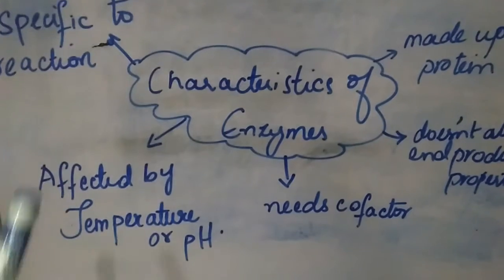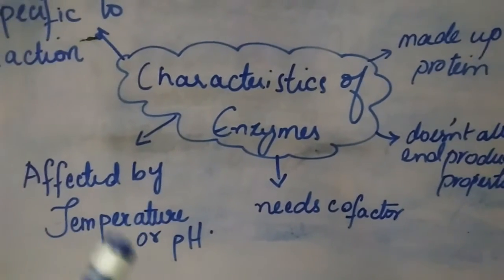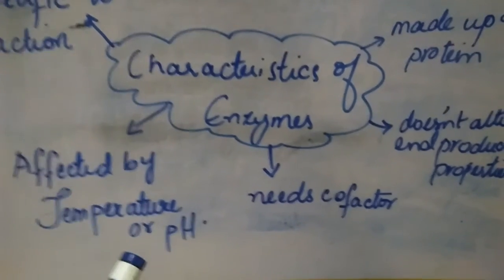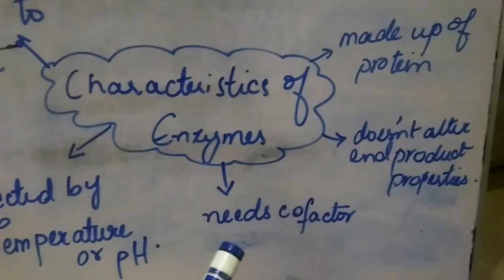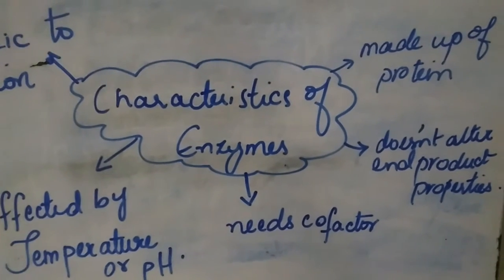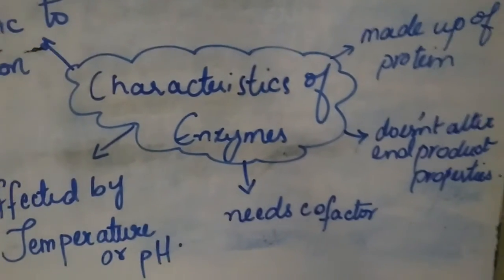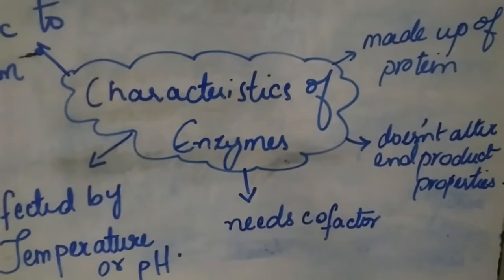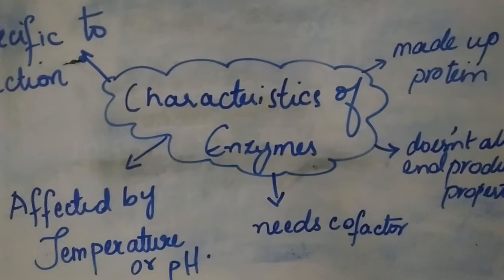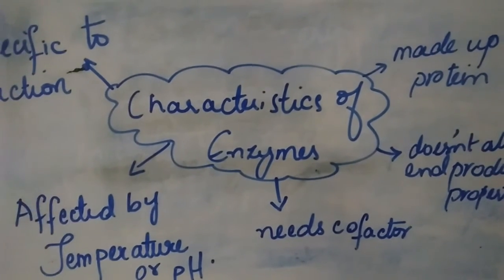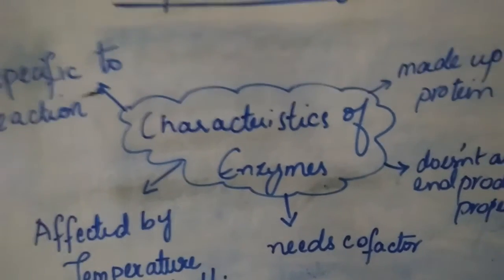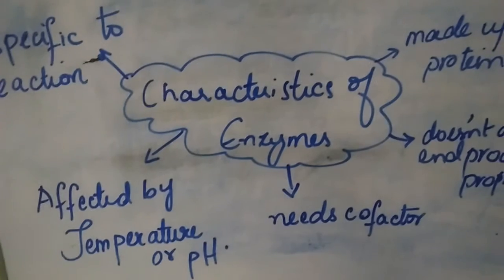Number two: enzymes are affected by temperature or pH. They are so sensitive that if there is a change in temperature or a change in pH, they can be affected by these conditions. Number three: enzymes need cofactors. Cofactors are elements that help enzymes in their proper functioning. These cofactors are of two types: the prostatic group, which is an organic cofactor tightly bound to the enzyme, and the coenzyme, which is loosely attached to the enzyme.